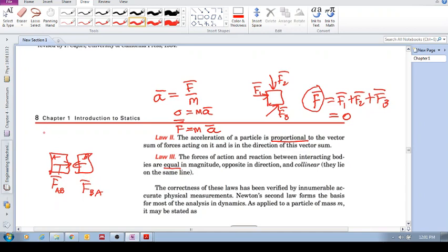So these forces of action and reaction between interacting bodies are equal in magnitude. Their magnitudes are equal, so F B A equals F A B. Notice, I don't have the bar on top or below, or the arrow, and so this refers to the magnitudes. It's opposite in direction. Any two interaction objects apply forces on each other that are opposite in direction. And they're collinear. They lie on the same line. Okay. So that's law three.